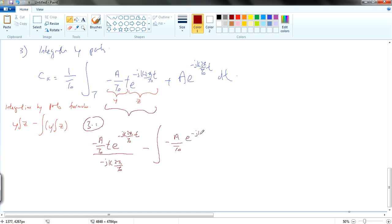Which is e^(-jk 2π/T0 t), and then divided by, I mean, minus jk 2π over T0. Same thing.